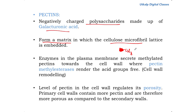At the cell wall, pectin methyl esterases are present. These enzymes cleave off the methyl group from the pectin and render the galacturonic acid groups free. This process is called cell wall remodeling. The level of pectin in the cell wall regulates its porosity — primary cell walls contain more pectin and are therefore more porous compared to secondary cell walls.